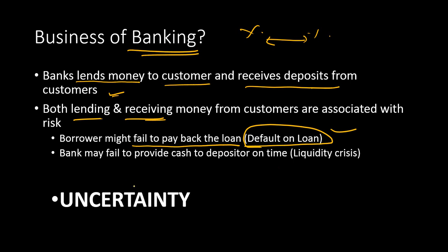When banks receive deposits from customers, they also face uncertainty and risk. Banks may fail to provide cash to a depositor on time. Sometimes banks don't have enough cash, and when a depositor comes and asks for their money, the bank won't be able to pay it back. That is known as a liquidity crisis, where the bank runs out of cash.